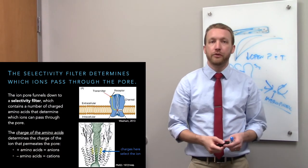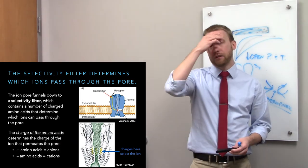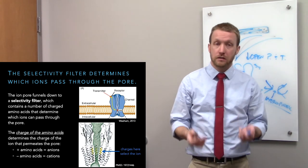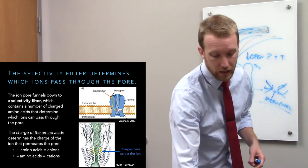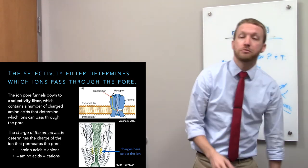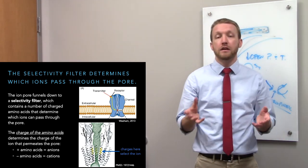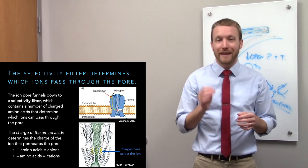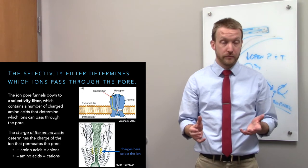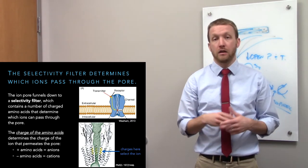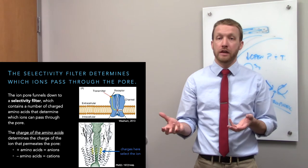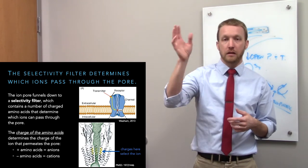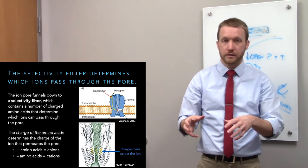Which ions move through depends on the selectivity filter located in the ion pore or at extracellular sites. Selectivity is determined by charged amino acids arranged in rings. Positively charged amino acids allow negatively charged ions through while repelling positive ions. Conversely, cation channels — which most of the receptors discussed today are — have negatively charged amino acids that repel anions and attract cations into the pore.